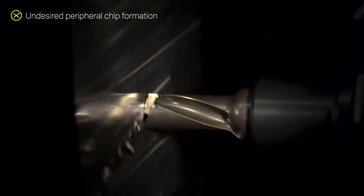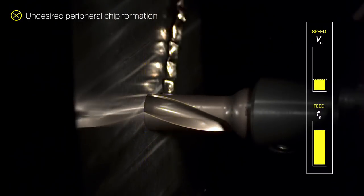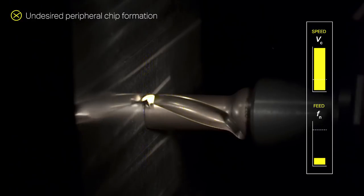To avoid producing peripheral chips that are too long, try increasing the cutting speed or reducing the feed rate.